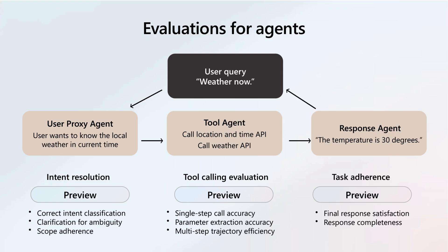Agentic evaluators specialize further by examining intent resolution, tool calling accuracy, and task adherence. Since agents autonomously decide when and how to invoke external tools, these evaluators verify that tool calls occur at the right time with appropriate parameters. Proper understanding of user intent is critical for ensuring meaningful and accurate responses. Response completeness is monitored to make sure agents deliver thorough answers. For highly customized use cases, you can build your own evaluators using an AI-driven or Python code framework.